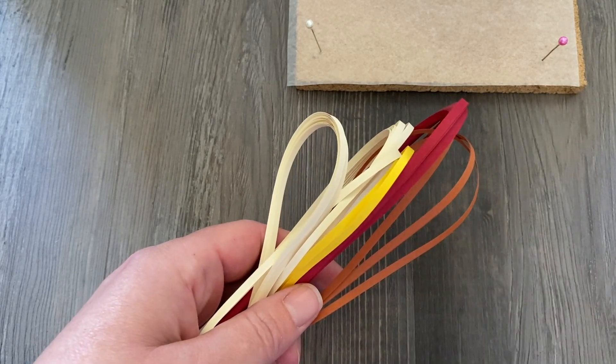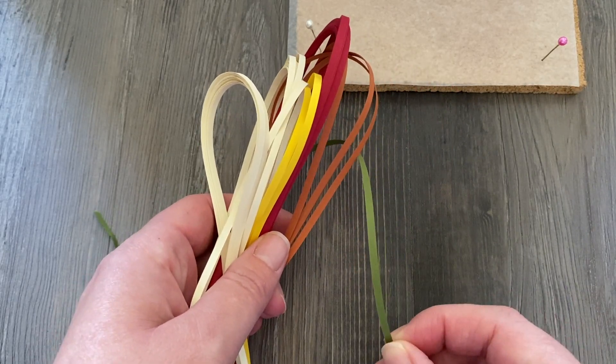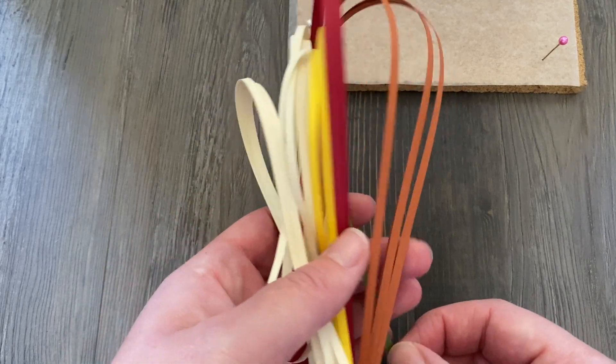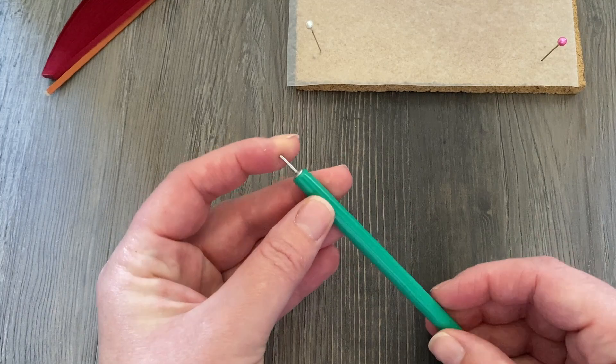Let's jump into our supplies. I'm going to be using some very traditional fall colored quilling paper strips. I'll go over those in detail as they come up. These are all going to be one-eighth inch wide strips, various lengths.